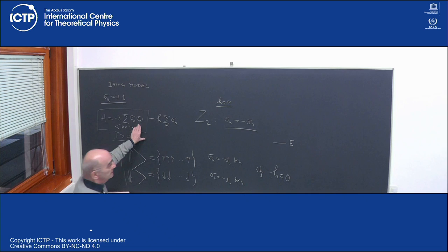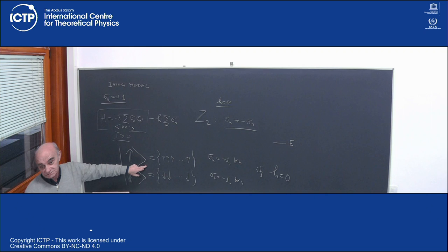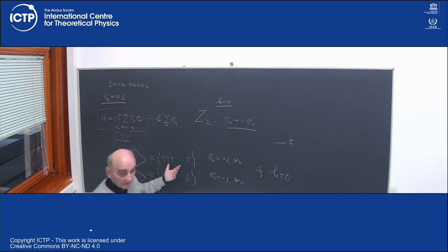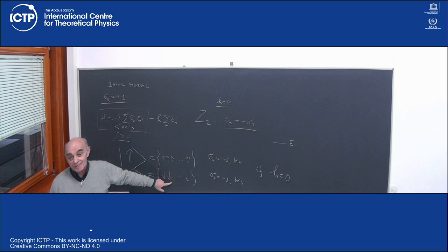The Hamiltonian is Z2 invariant, but the ground state is not. If I choose the all-spins-up state, this is a minimal energy state, but if I overturn all the spins, it transforms not to itself but to the all-spins-down state. This is an example of broken symmetry.